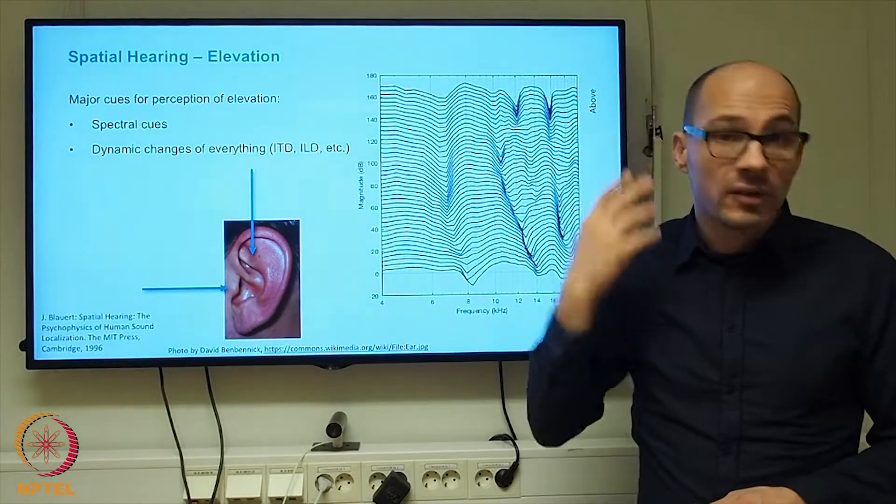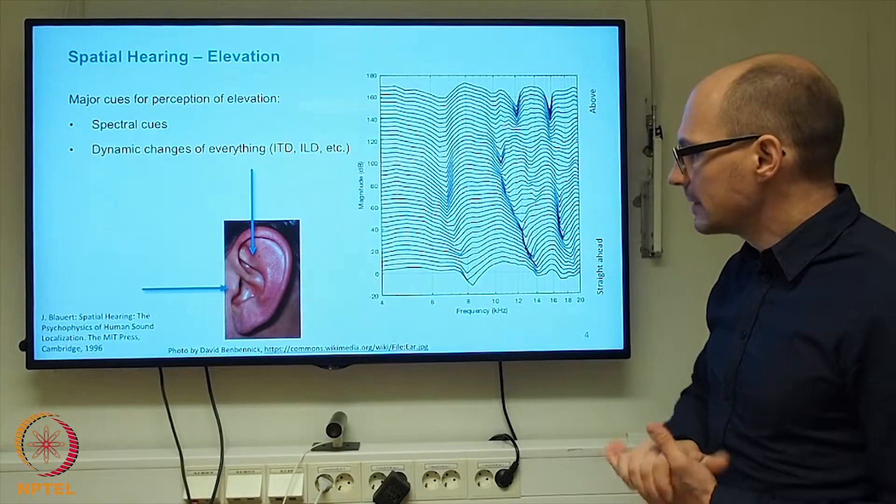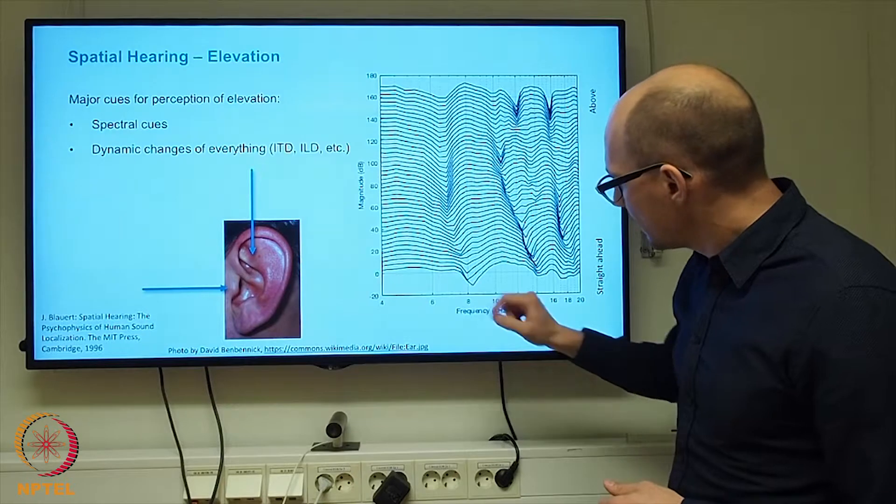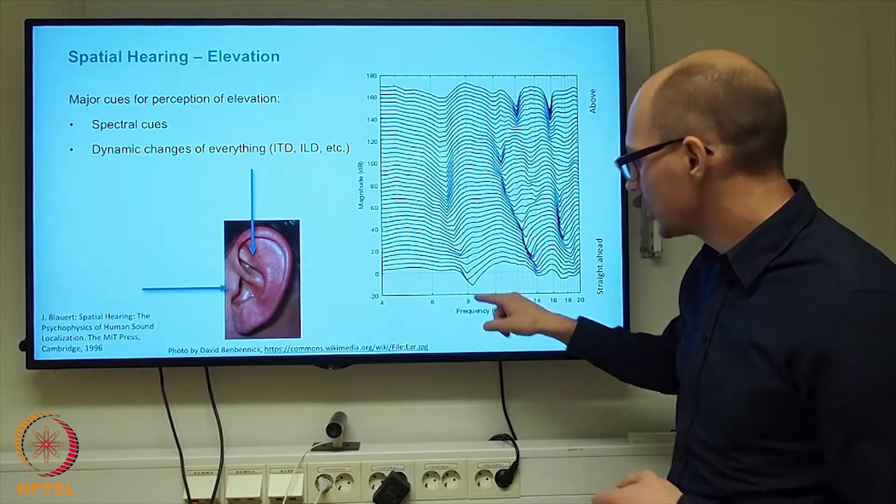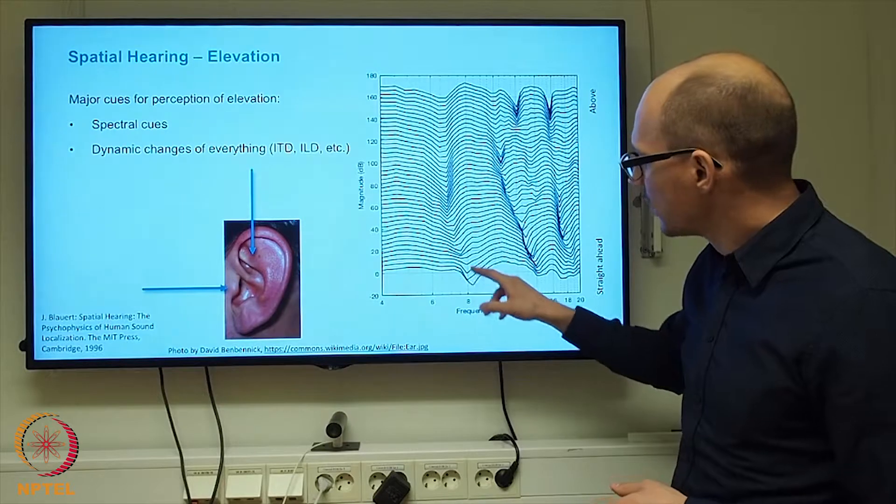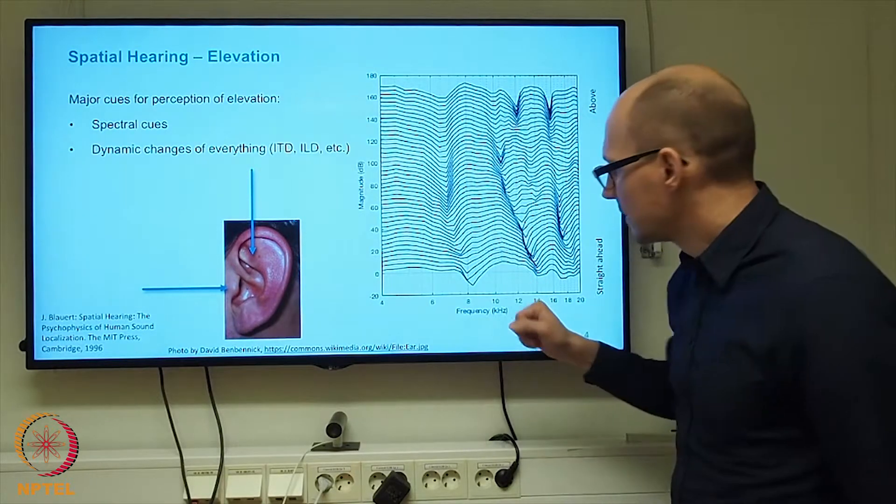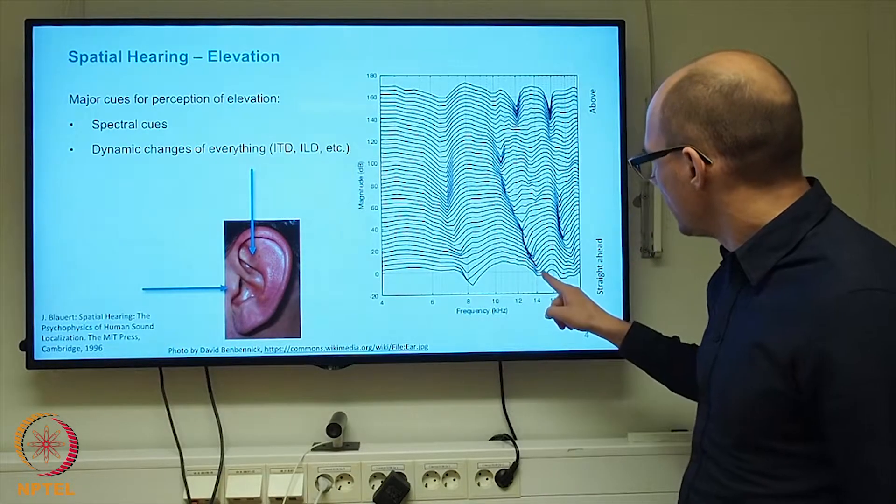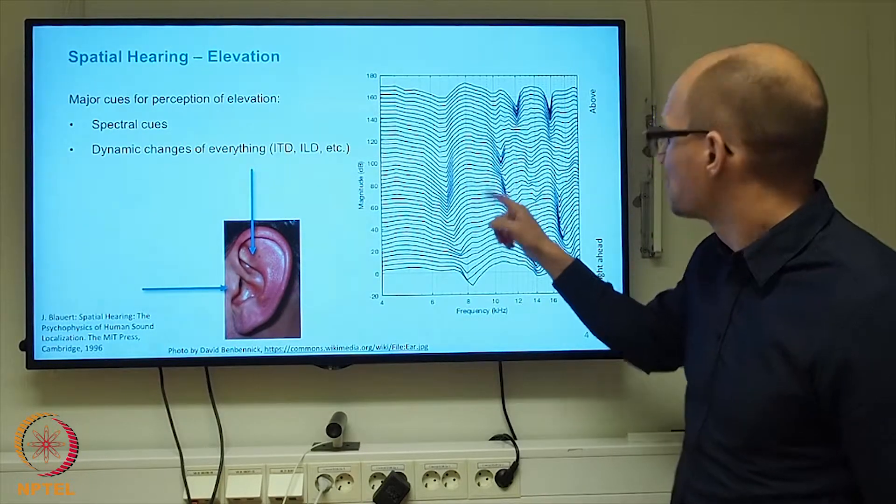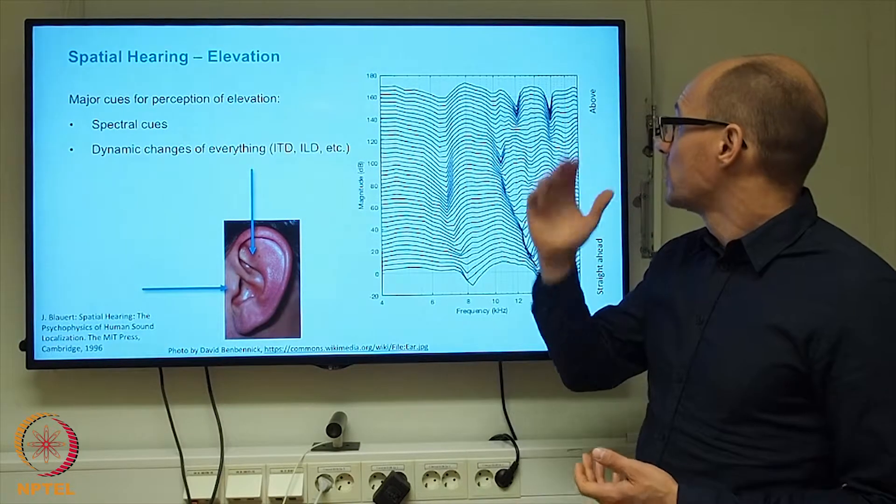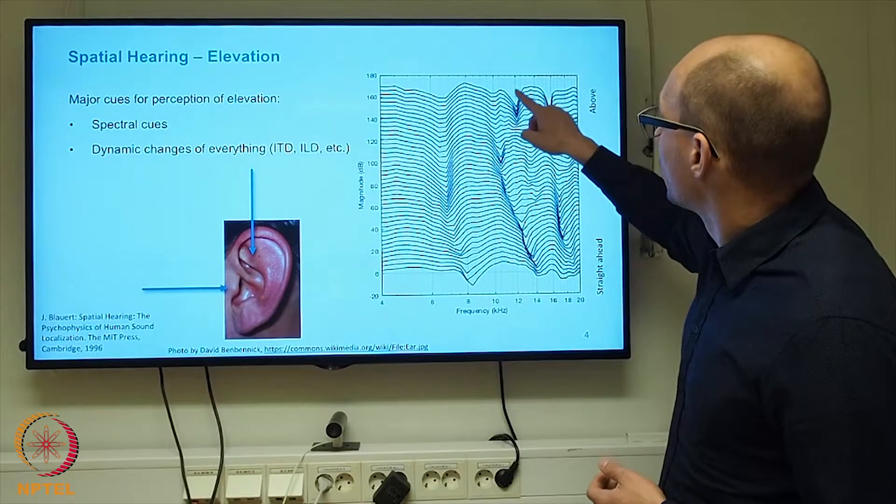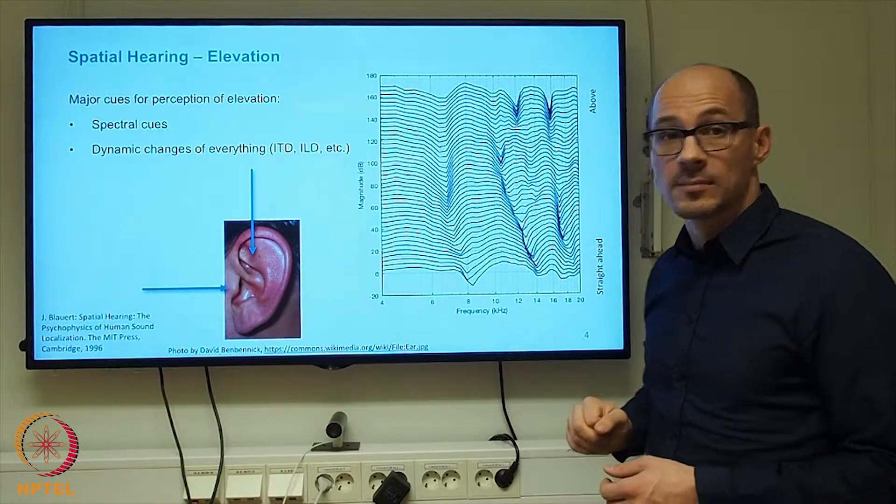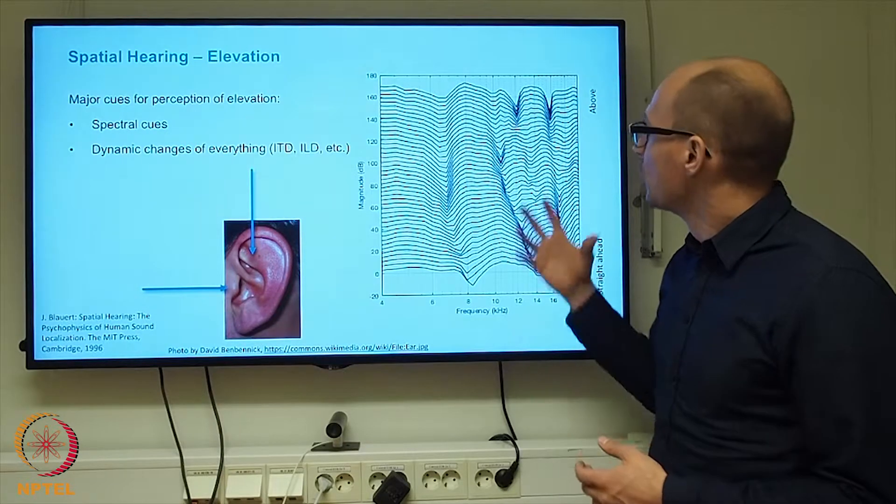This is because of the interference that is taking place in the outer ear. If you are looking for example at this dip, we have this dip of a couple of 10-ish decibels around 8 kHz. If the elevation of the sound source increases, then this dip moves down in frequency slightly. Similarly, this dip moves down in frequency also fairly strongly with changing elevation, and for certain elevations there is even another dip that did not exist before for other elevations.